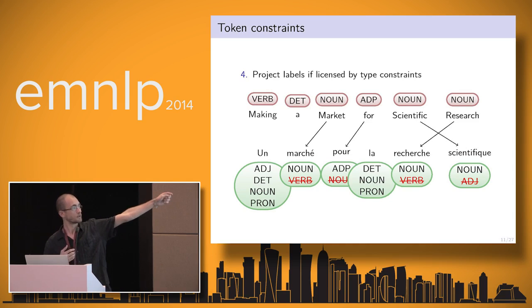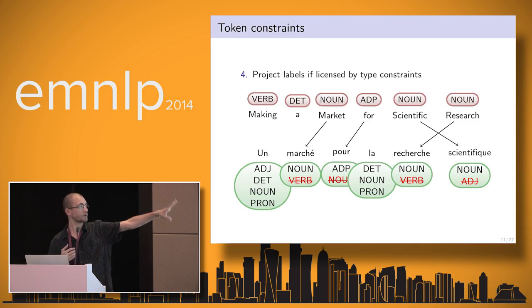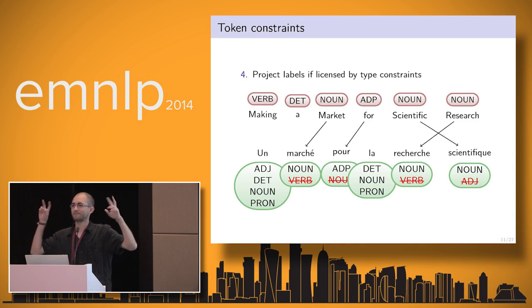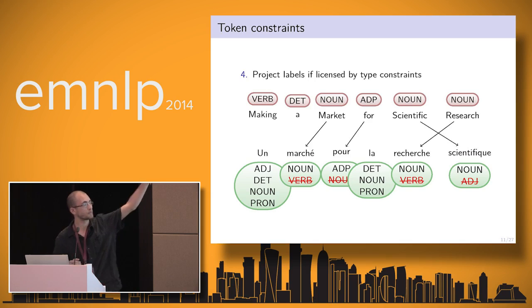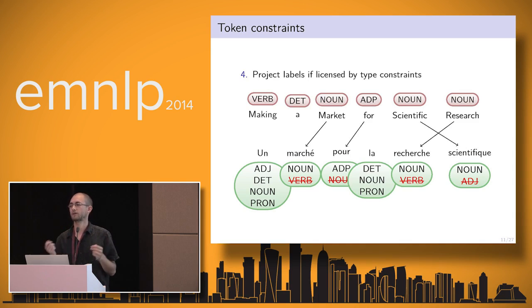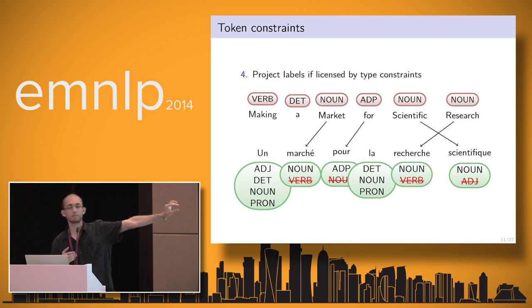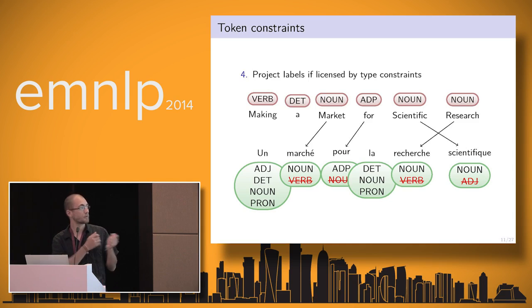The second idea is to use token constraints. We start with a sentence which we label with the type constraints, giving us an ambiguous labeling for every token — we can already learn from this; this is unsupervised learning with dictionaries. Then we use the alignment links from the parallel corpora to project the tags, doing it the same way as Tagstrom: we only project a label if it is consistent with the type dictionaries, because type constraints are considered more reliable.